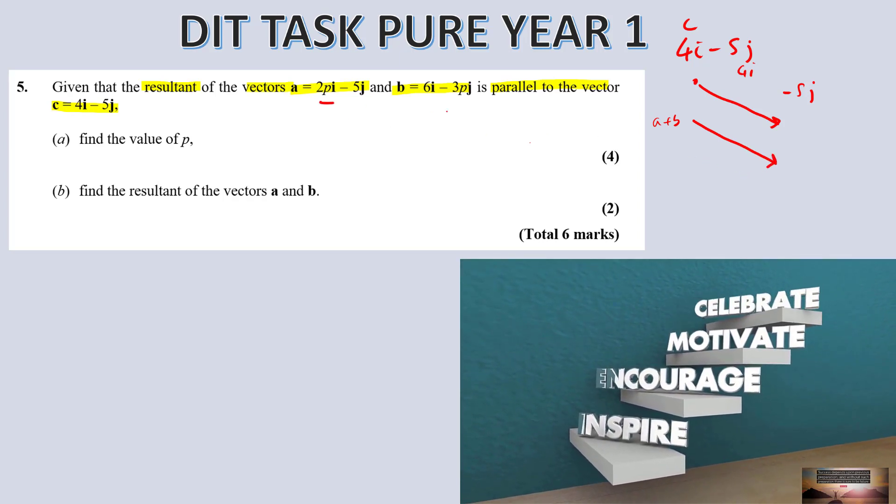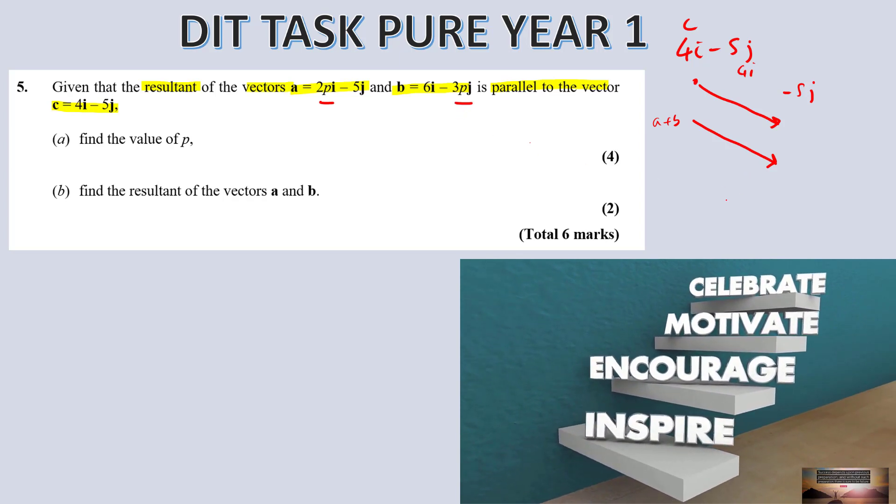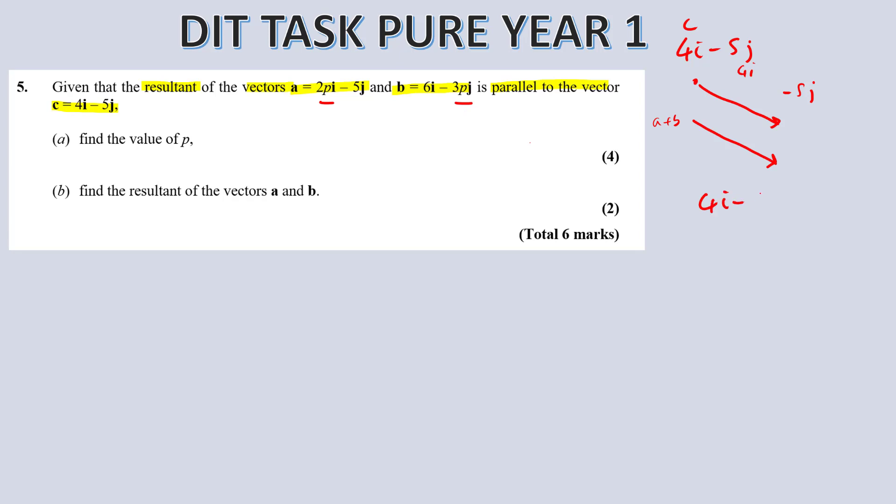Now we have unknown p in both to find it. Now when vectors are parallel, so for example 4i minus 5j, a vector that's going to be parallel is going to have some kind of multiple scalar, m or k, so the answer's going to look something like this. That's the resultant of a and b, because we don't know what p is. So we've got to equate the i's and equate the j's.